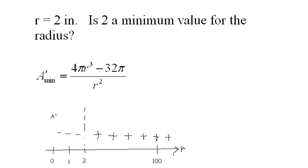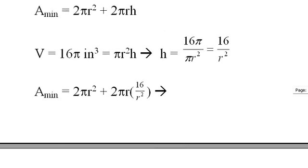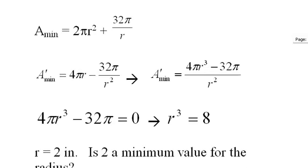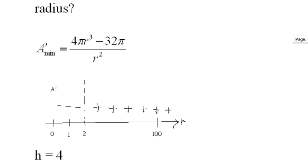And now if I need to find the height of the can, I simply go back to this formula. Height equals 16 over r², right? So if I put in two for r, I get h equals four. So my dimensions of the tin can with the least amount of surface area, or one that utilizes the least amount of metal, is r equals two and h equals four inches.